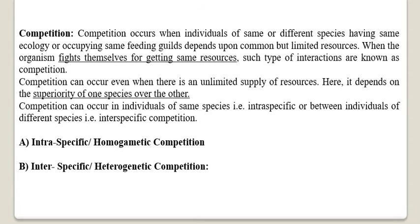Now let's begin with the concept of competition. Competition occurs when individuals of the same or different species having the same ecology, or occupying the same feeding niche, depend upon common but limited resources. When organisms fight for getting the same resources, such interactions are known as competition. Competition can also occur even when there is unlimited supply of resources.